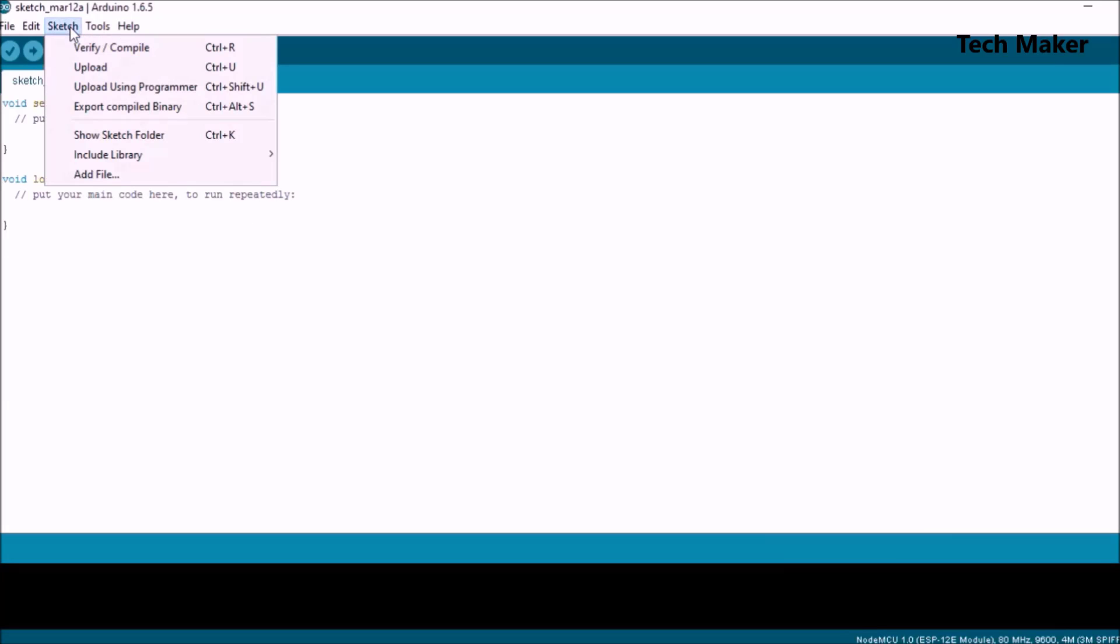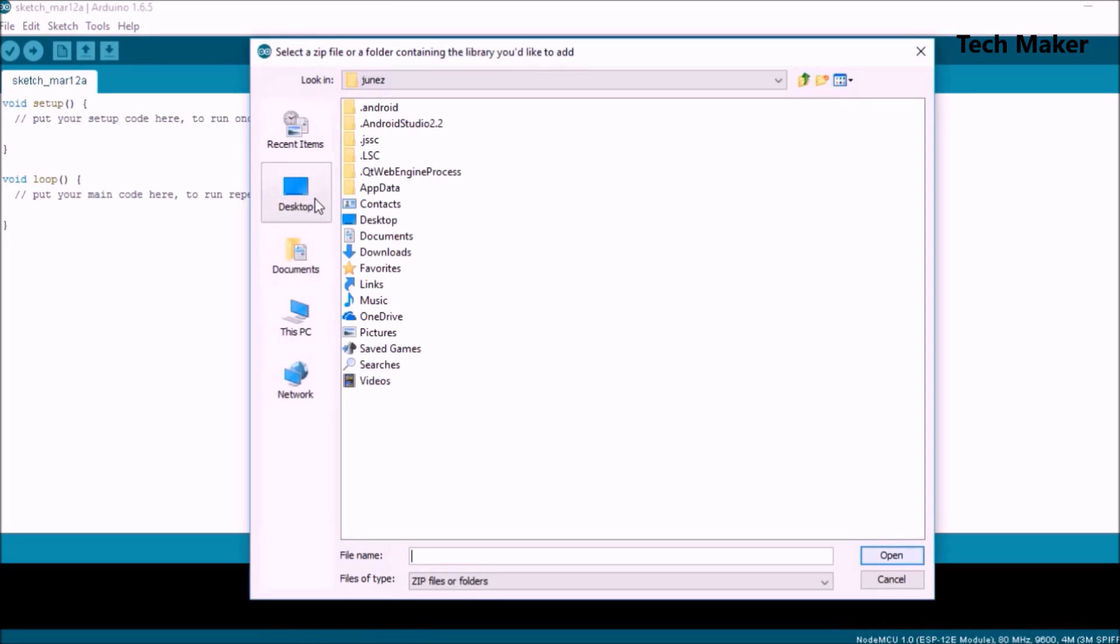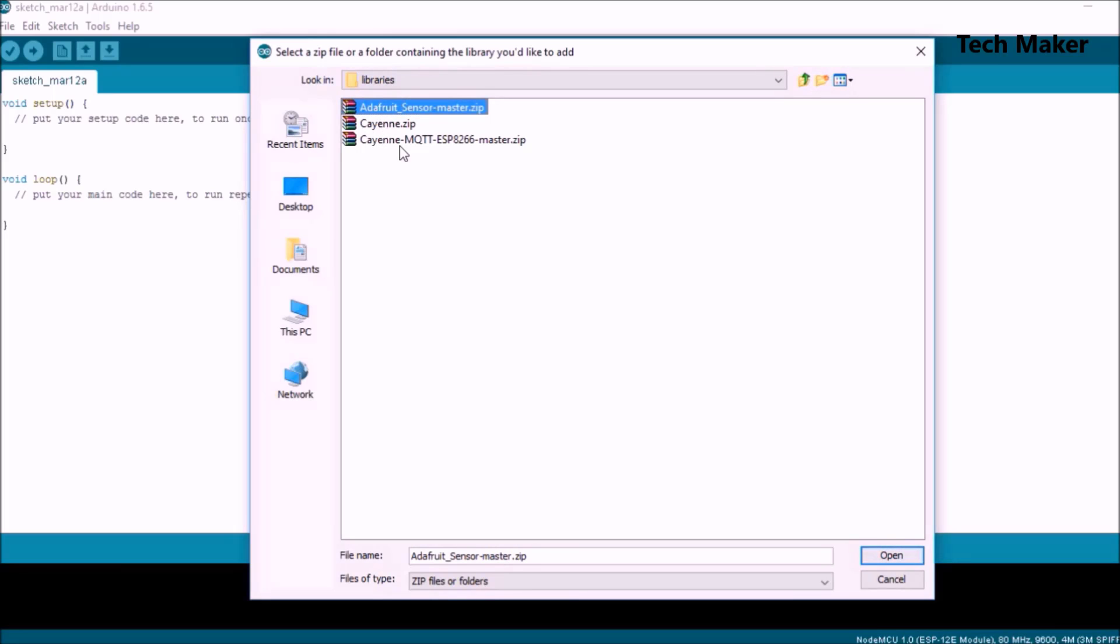Now go to Sketch and include the libraries, so add a zip library. I've given the link in the description, so you can download the libraries there. After downloading the libraries, go to the path of the libraries and you need to open it. Since I already included the libraries, I am not including them here.